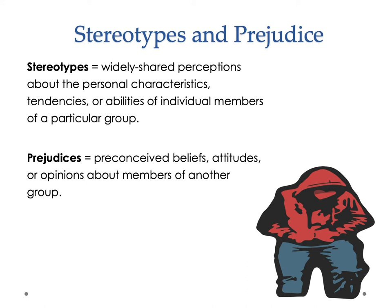Psychological theories help us explain why stereotypes and prejudices are so persistent. One view is that social contact can help mediate this, but social contact is not always effective in moderating stereotypes or prejudice. Prejudice, as opposed to stereotype, refers to the preconceived beliefs, attitudes, or opinions about members of another group. Whereas stereotypes are widely shared perceptions about characteristics or tendencies of group members, prejudice is more individual. Stereotypes tend to be things we collectively share; prejudices are something I might hold personally.